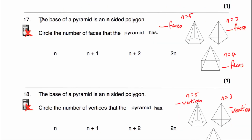Question number 17: circle the number of faces the pyramid has. A triangular base pyramid (n=3): 1 base plus 3 triangles = 4 faces. A square base pyramid (n=4): 1 base plus 4 triangles = 5 faces. A pentagon base pyramid (n=5): 1 base plus 5 triangles = 6 faces. The number of faces is always one more than n, so the answer is n+1.